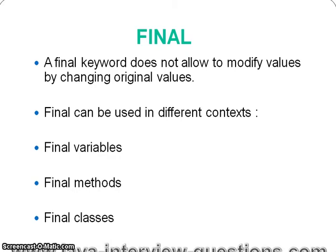First we'll go through the introduction for final and what is final. As the keyword suggests, final does not allow modifying values by changing the original values. Final can be used in different contexts, but the original meaning is: once the value is set, we cannot change it — that means it acts like a constant. If we take a variable, it acts like a constant; once the value is defined, we cannot change it.